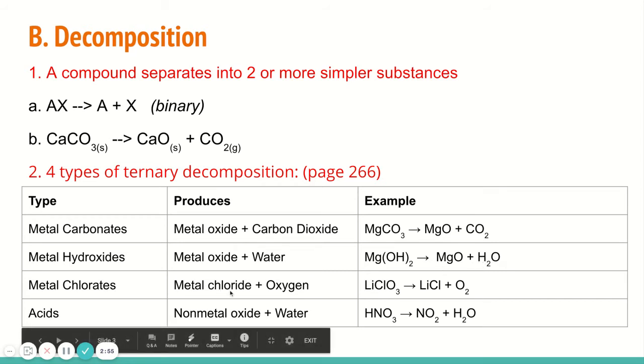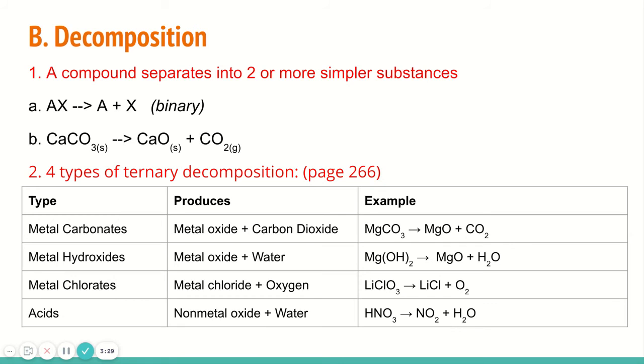Metal chlorate is another one that you could have a decomposition of. So again, a metal with a chlorate ion, that's ClO3, that's another polyatomic ion. You'll get lithium chloride and then oxygen is your other compound. The last one is an acid. If you have an acid that is decomposing, you're going to get a non-metal oxide, so whatever the non-metal is in the acid with the oxygen, and then you're going to get water as your other product.